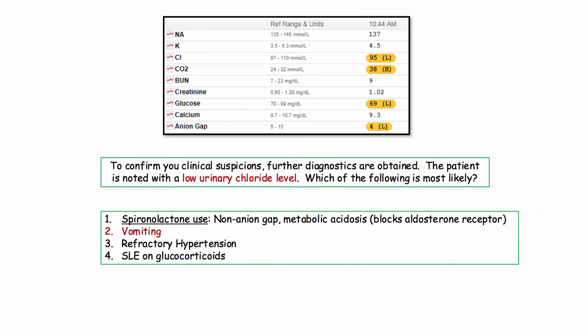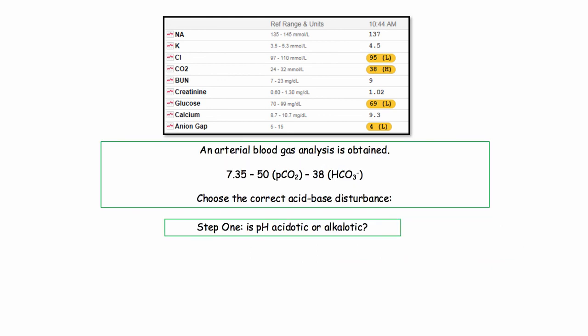As far as spironolactone, this agent is an aldosterone receptor antagonist, thereby blocking the effects of aldosterone. As such, not only do you not have alkalosis, but it causes a non-anion gap metabolic acidosis, just as seen in aldosterone deficiency and diarrhea.